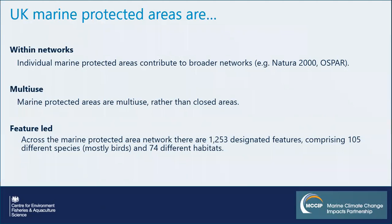UK marine protected areas are also typically multi-use rather than fully closed areas, which presents challenges in trying to identify appropriate management responses. There's a need to think about how we attribute any impacts to different factors — whether that be human activities, natural variability, climate change, or a combination. In the UK context, MPAs are feature-led: they are in place to protect specific identified species and habitats. Back in 2016 there were 1,253 separate designations covering 105 different species — mostly birds — and 74 different habitats.